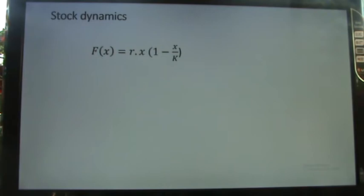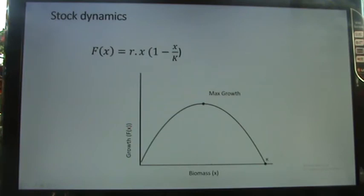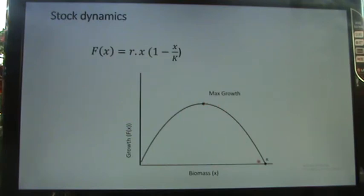Looking at the growth function graphically: the x-axis is stock biomass and the y-axis is growth. Starting from a small but positive biomass value, the stock grows faster and faster, reaches a maximum growth point, then growth declines until it reaches the carrying capacity K, after which there is no further growth. This is the logistic growth curve.